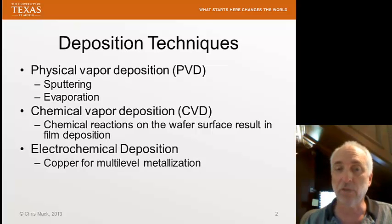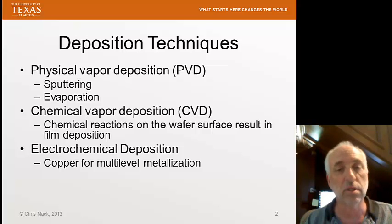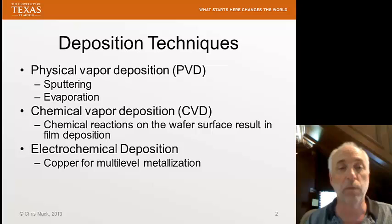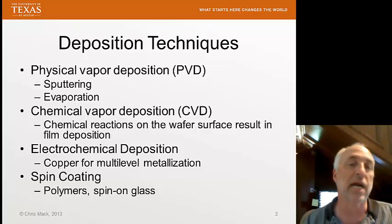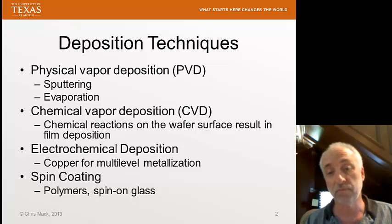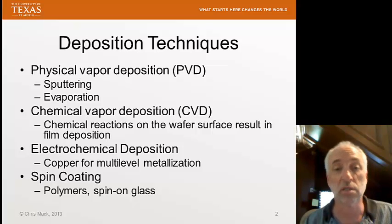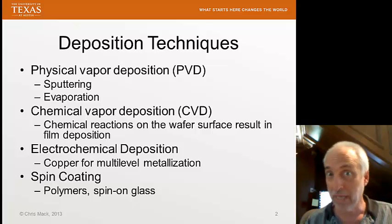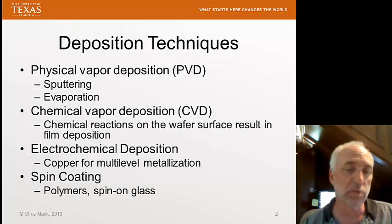We also mentioned electrochemical deposition, specifically for copper. When we talk about metallization and interconnect processes in a few lectures, we'll go into more detail about the electrochemical deposition of copper. When we get into lithography, we'll talk about spin coating, which is used for coating polymers onto a wafer. Photoresist in particular, used in lithography, will be coated using a spin coating process. Spin-on glass is another approach where we have a polymer glass material that we spin on, which can be used for a number of different purposes.